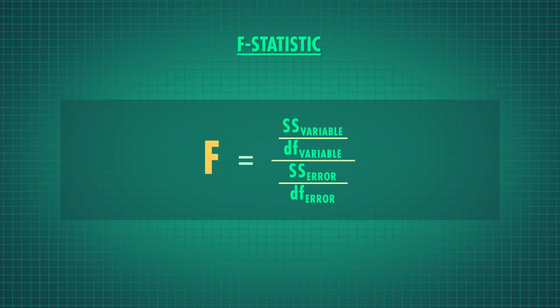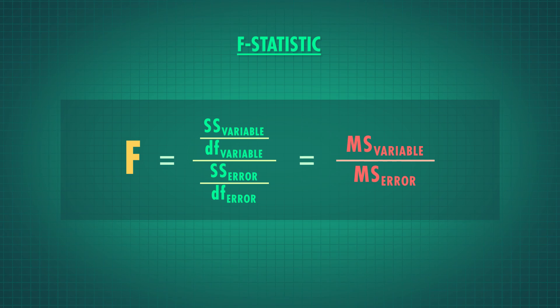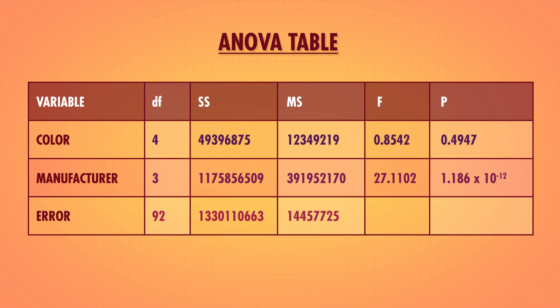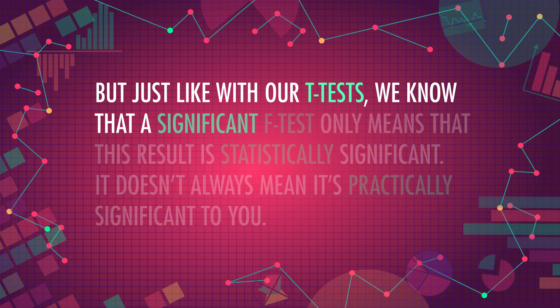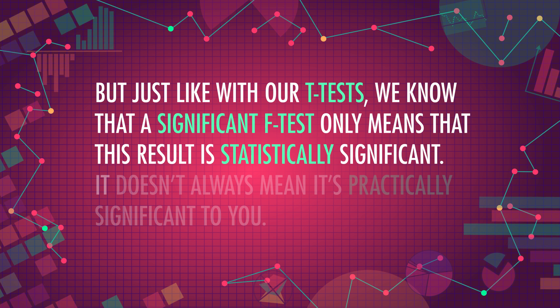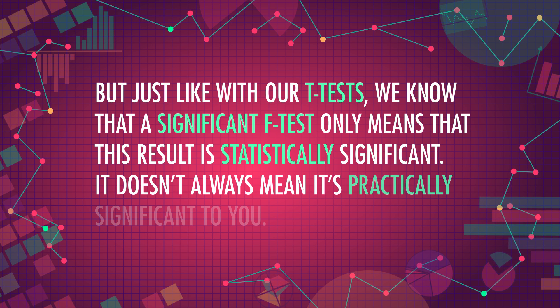We're going to use our model and the error to create F-statistics for each part of our model, as well as the model as a whole. The F-statistic is a ratio between the scaled sums of squares for a variable and the scaled sums of squares for the error — we call these scaled versions mean squares. When we create these models using statistical software like R, Python, or even Excel, we'll usually get an ANOVA table as output. We can see in this table that the p-value for color is way bigger than our alpha cutoff of .05, so we didn't find any evidence that color has a significant effect on car price.